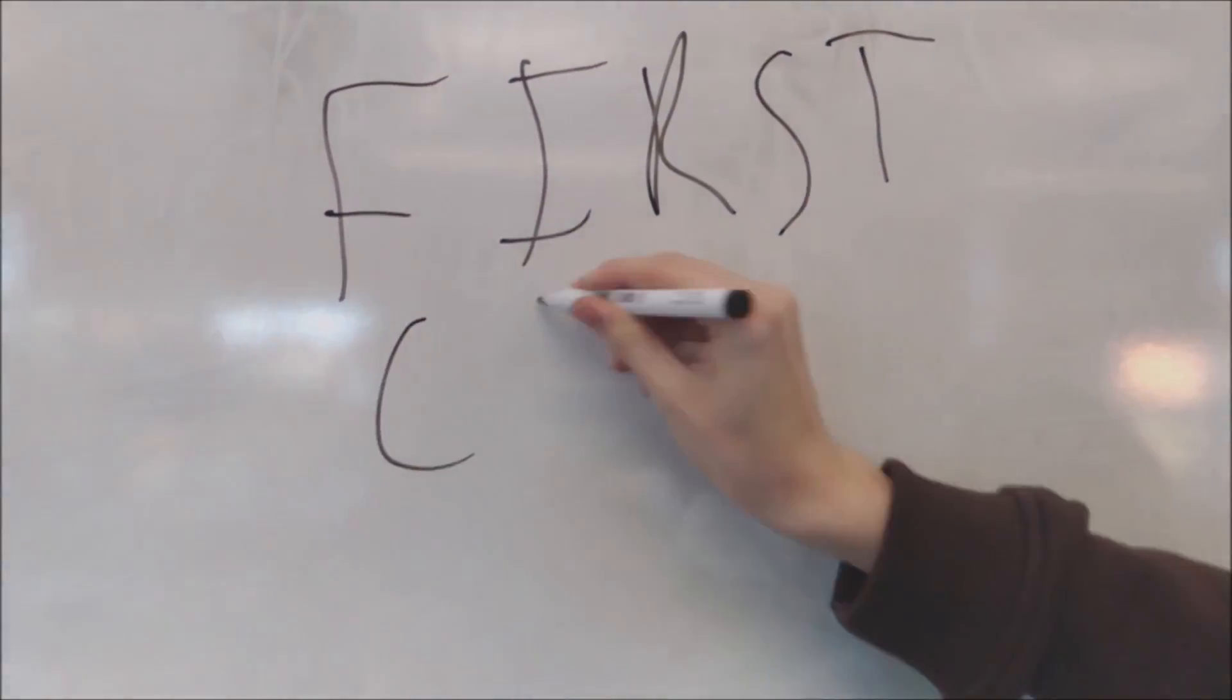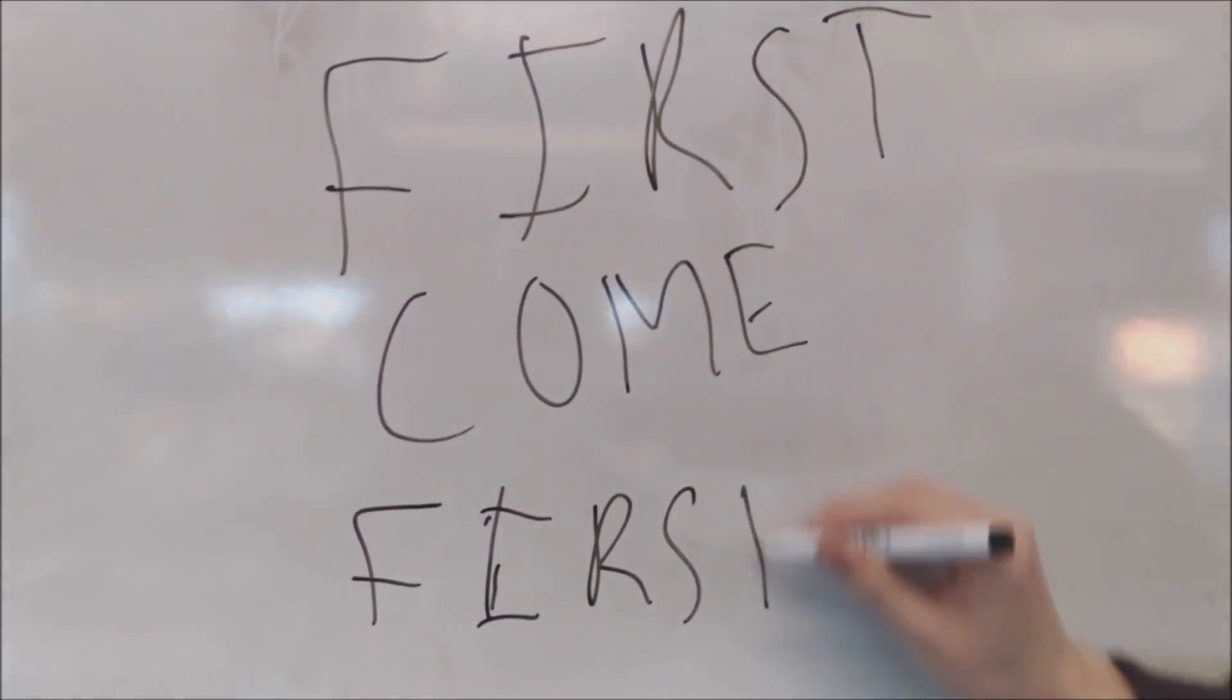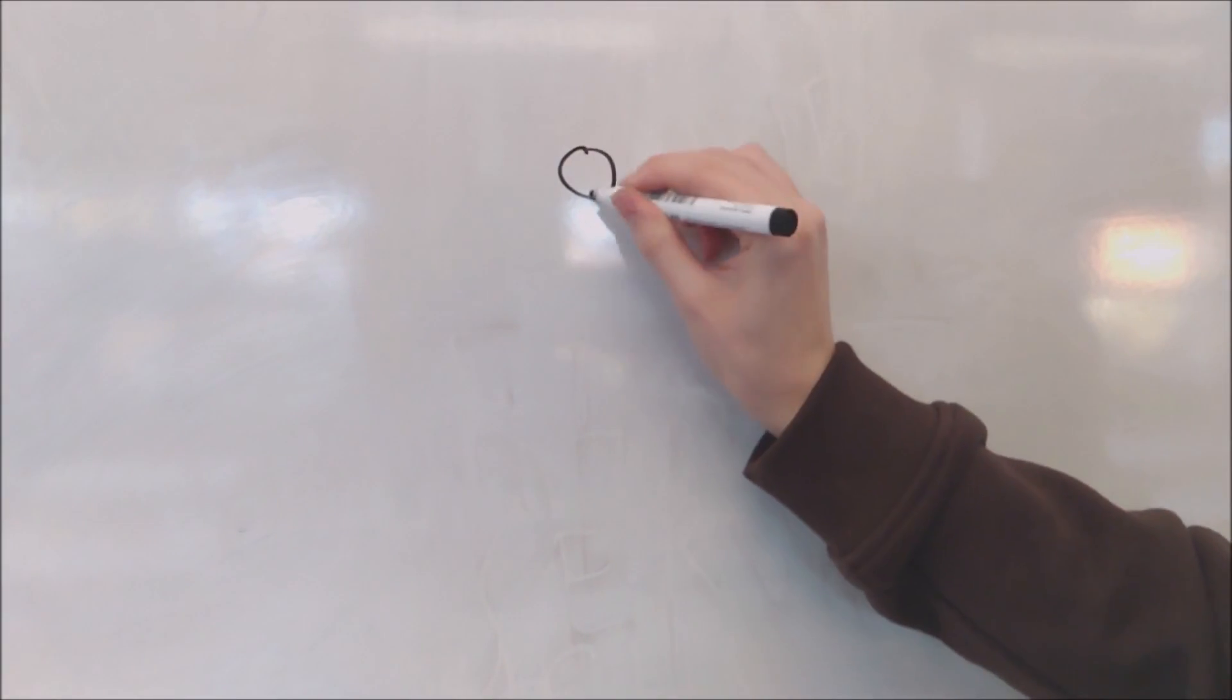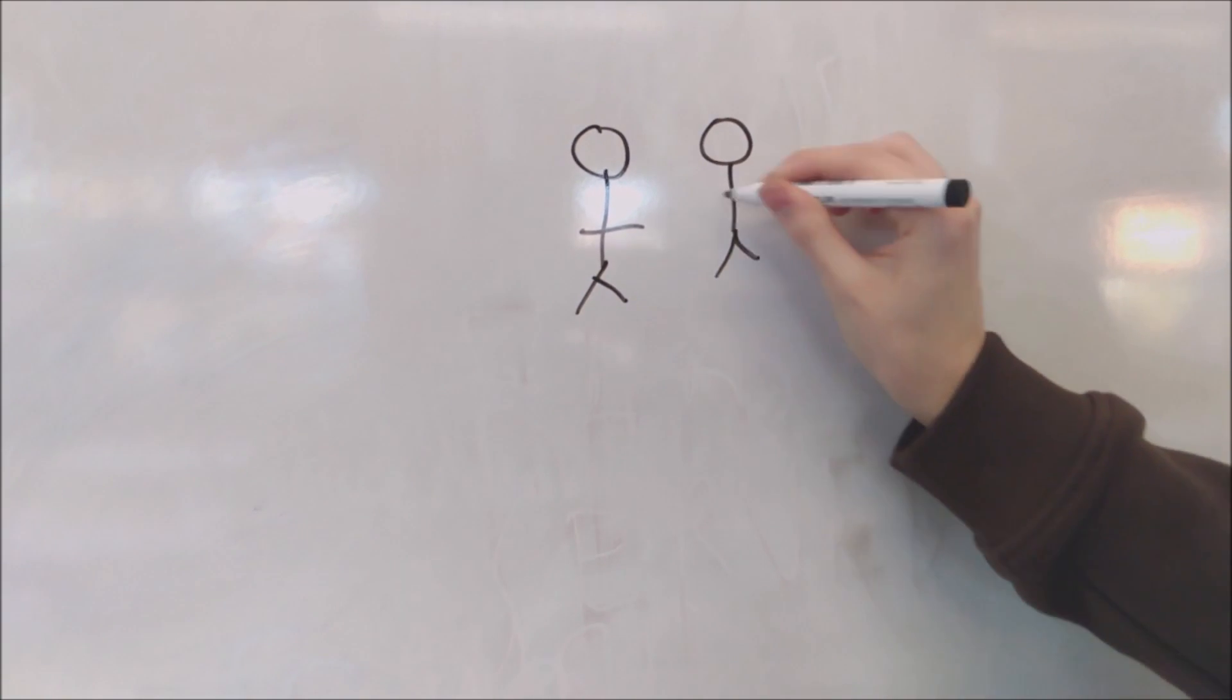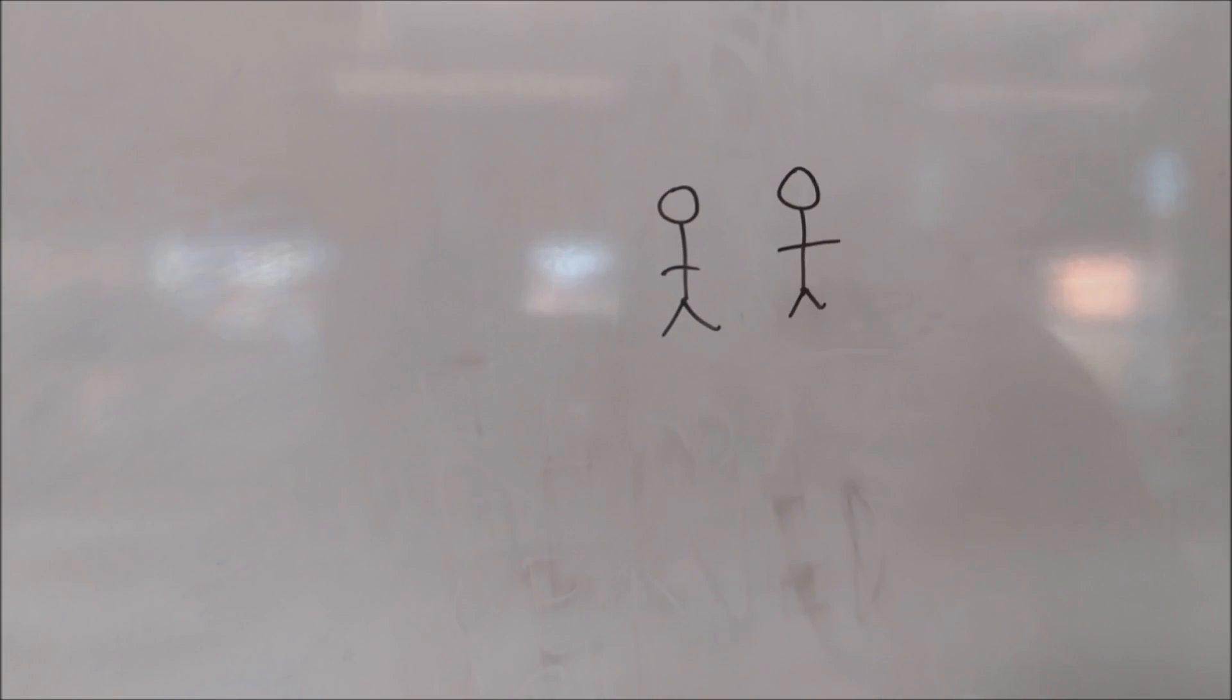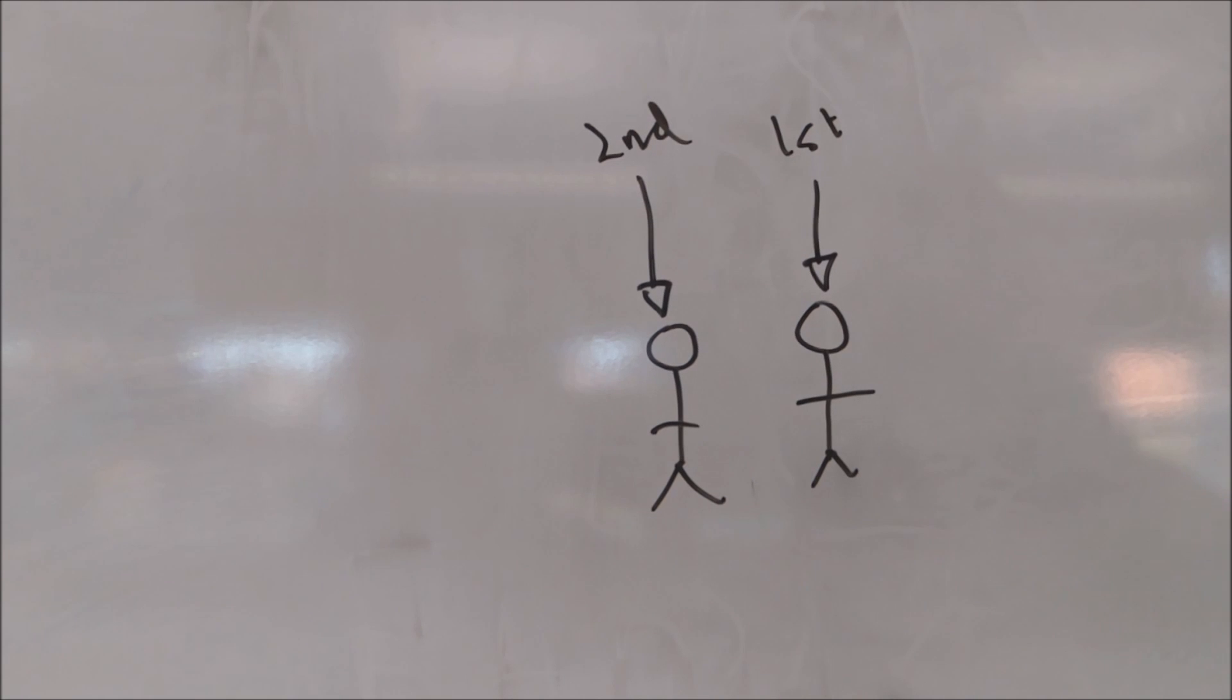The next algorithm is First Come, First Served. In this situation, we see there are two people in a queue. As they progress forward, the person at the front of the queue is still the first.